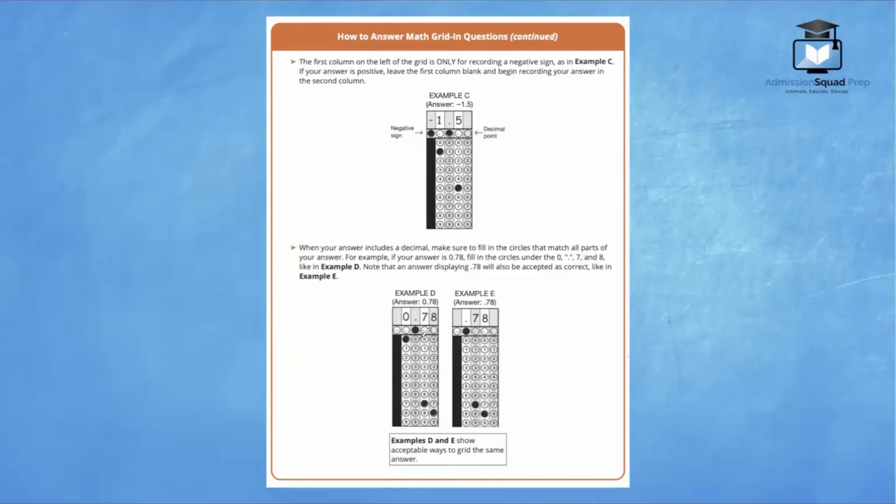This is example D here. Note that an answer displaying 0.78 will also be accepted as correct, like in example E. Some students like to write the 0 right before the decimal point, and some students prefer to omit it. The SHSAT will regard both of these answers as correct.